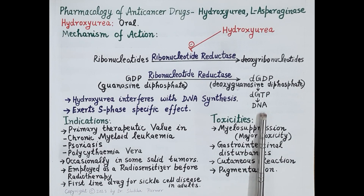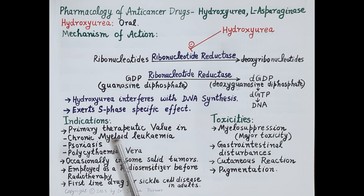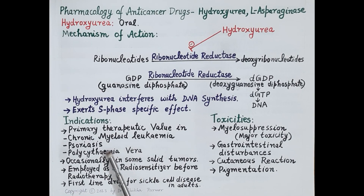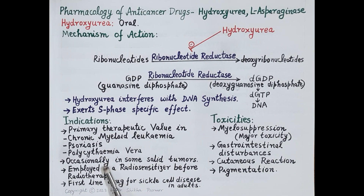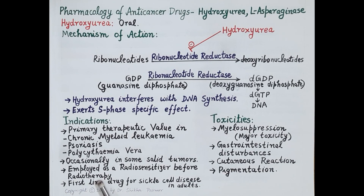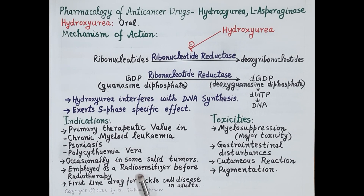Hydroxyurea is of primary therapeutic value in chronic myeloid leukemia, psoriasis, and polycythemia vera, and is occasionally used in some solid tumors. In addition, hydroxyurea enhances the effect of radiotherapy by accelerating DNA damage, and thus it is employed as a radiosensitizer before radiotherapy.